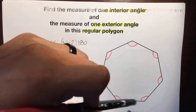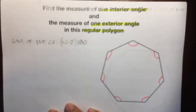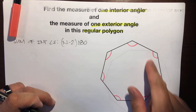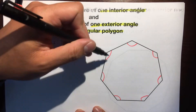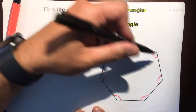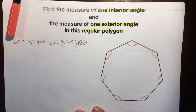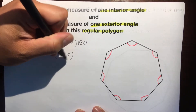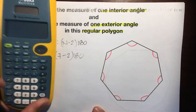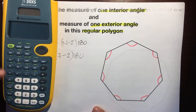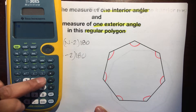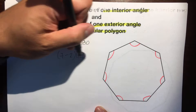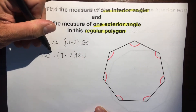We can figure out what all these angles add up to. Our n is 7 because there are 7 sides — it's a heptagon. So: 7 minus 2 times 180. Let's put that in our calculator: 7 minus 2 is 5, times 180 equals 900. So the sum of interior angles is 900 degrees.